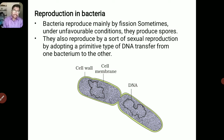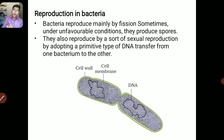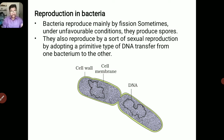Bacteria reproduce mainly by fission. Sometimes, during unfavorable conditions, they produce spores. They reproduce asexually by fission and spore formation. When conditions become favorable, they undergo sexual reproduction by adopting a primitive type of DNA transfer from one bacterium to another bacterium.